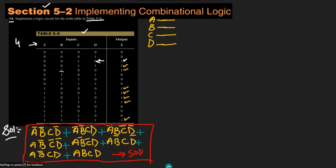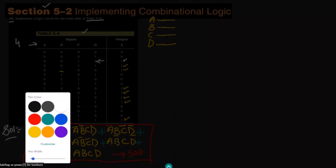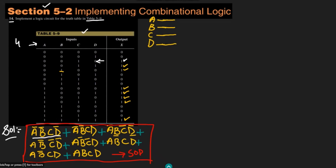The first term is A, B prime, C, D prime. I know I will be needing the complements as well, so let me first complement each one of them by using inverters. The inverters are placed here, and here I will get A complement, B complement, C complement, and D complement.